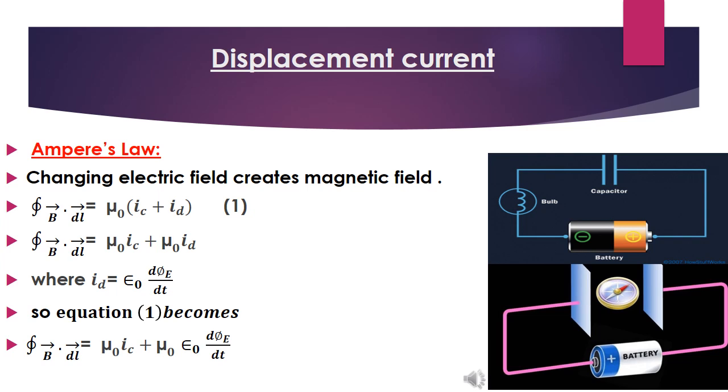So, displacement current is that current which is doing the job of the normal current. And this current is known as conduction current because the charge particles are conducting. So, between capacitor, there is a current because magnetic field is created there. And this I call displacement of conduction current or in short, it is called displacement current.